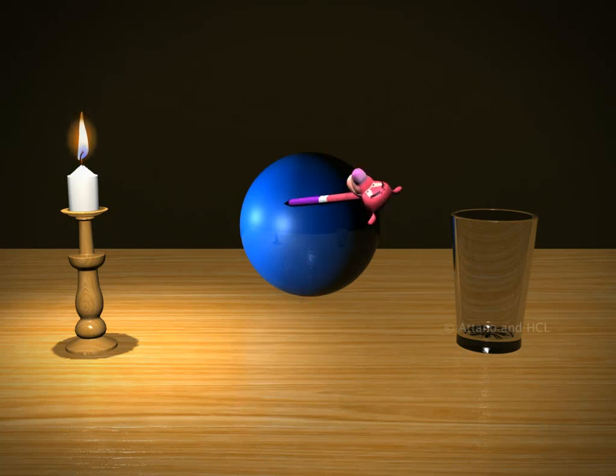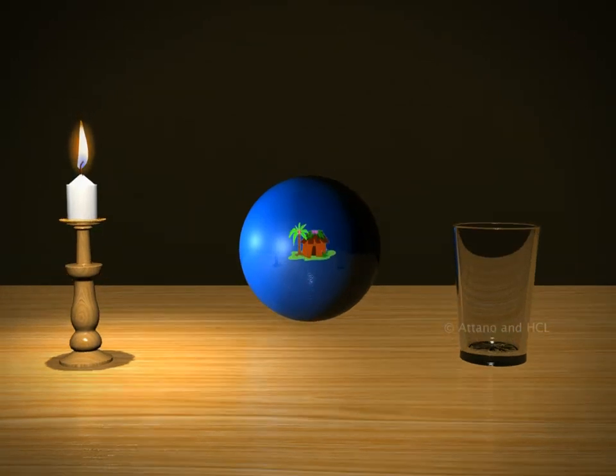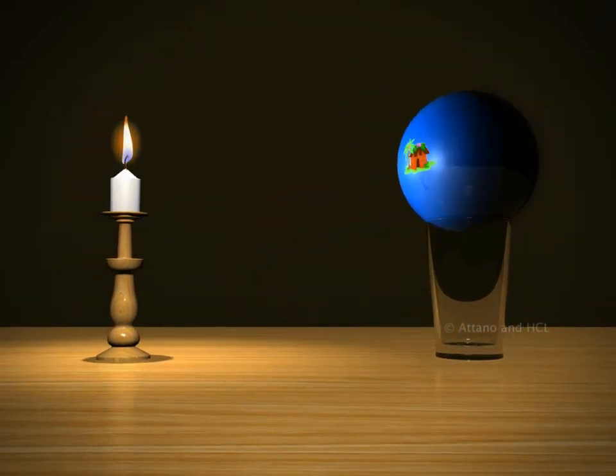With the pen, draw a small house on the ball. Place the ball on the glass and fix the candle in front.